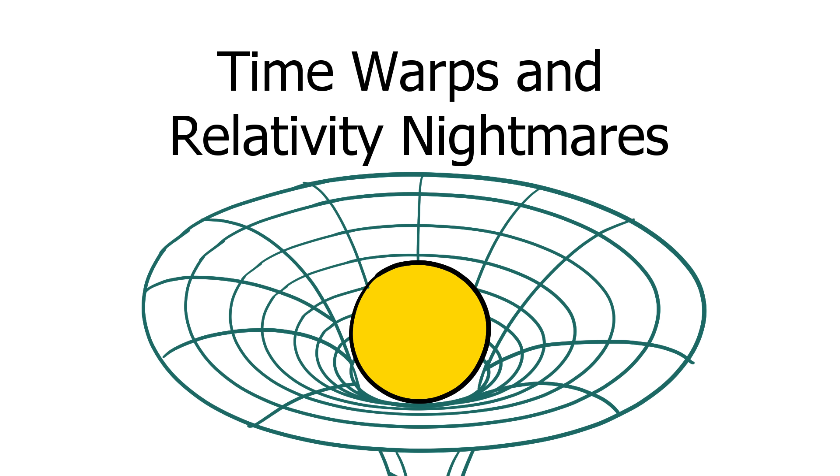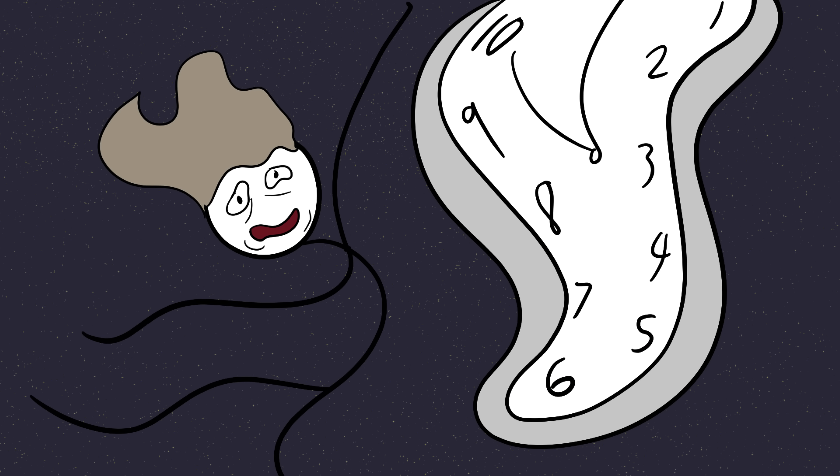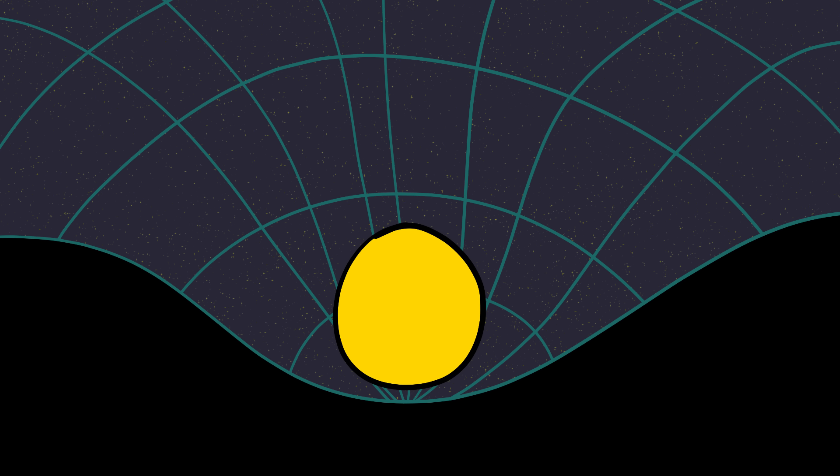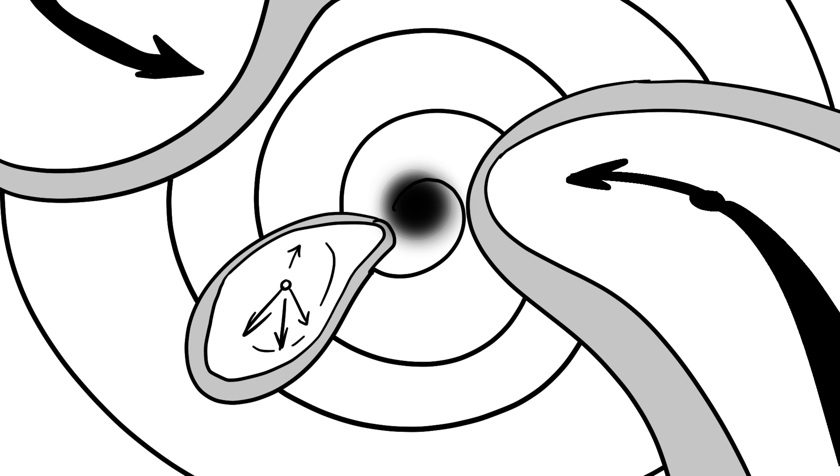Number two, time warps and relativity nightmares. If space is scary, time in space is downright freaky. Einstein's relativity taught us that time isn't fixed. It bends and stretches depending on gravity and speed. Which means in certain places in the universe, time can get seriously messed up. Take black holes again. Near their edges, the event horizon time slows down compared to the outside universe.